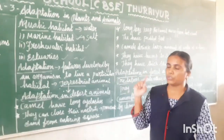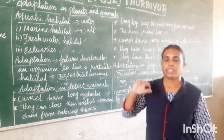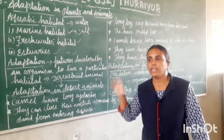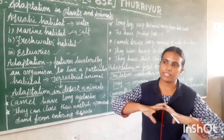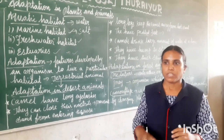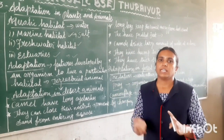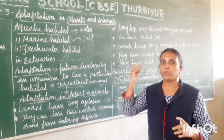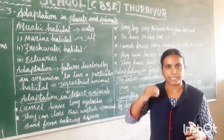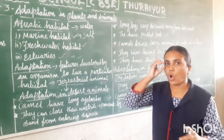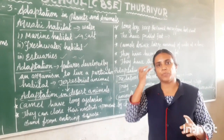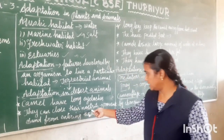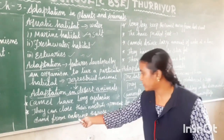The desert climate is very hot during the day and very cold at night, and fully covered with sand. When heavy wind blows, sand particles come along with the air. In order to prevent sand entering their eyes, camels have long eyelashes and thick eyebrows. They can also close their nostrils to prevent sand from entering their nose.